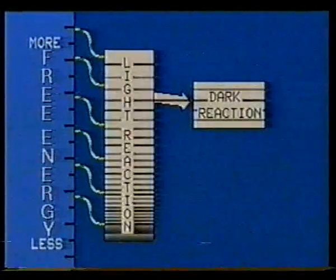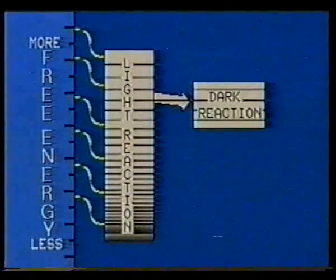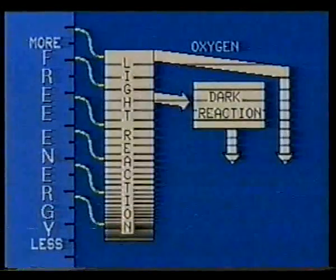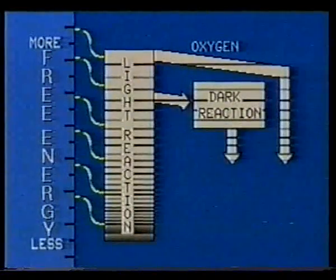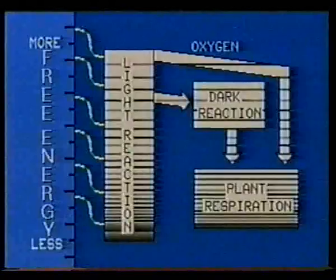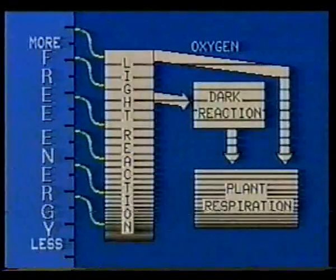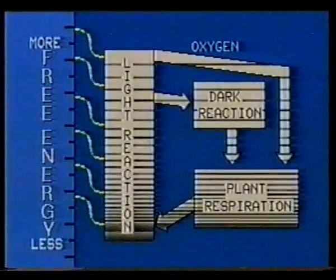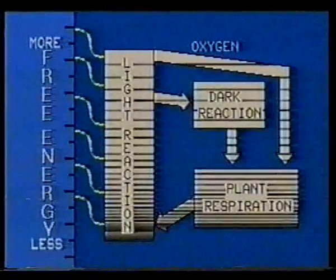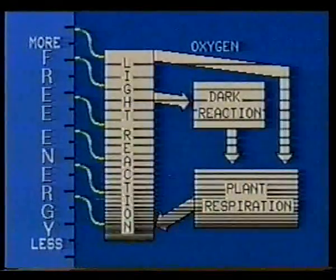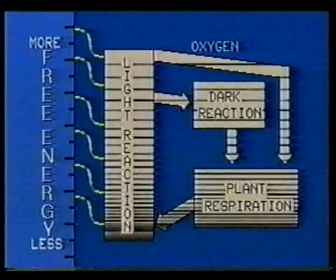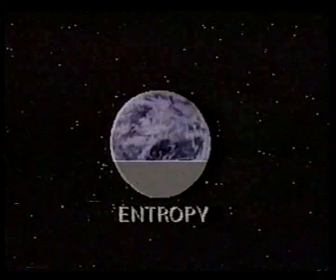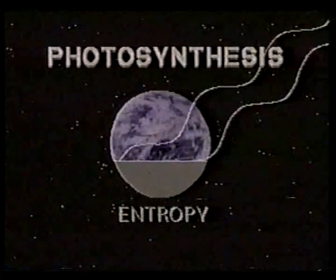Photosynthesis produces both a vital by-product — oxygen — and enough extra energy to fuel the energy-expensive reactions of plant respiration. Even when this cycle is complete, not all the plant energy is used up. The extra energy stored in this cycle is the foundation of all other life, including our own. Entropy is held at bay on Earth by photosynthesis in plants.